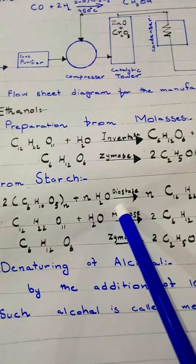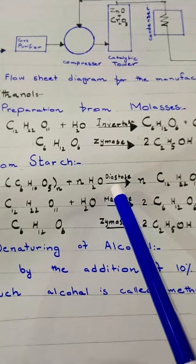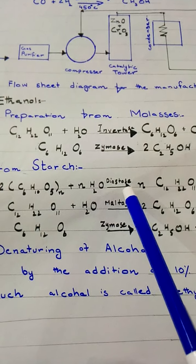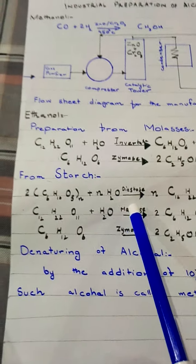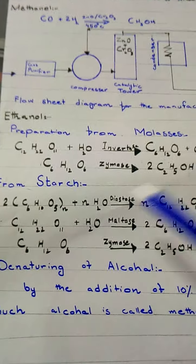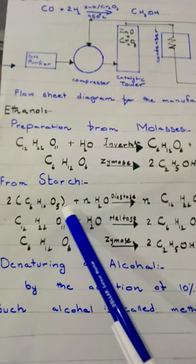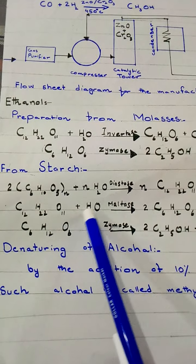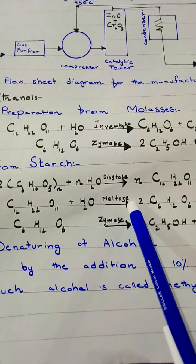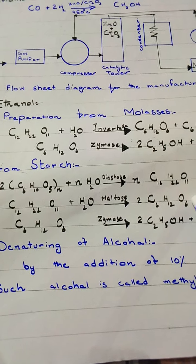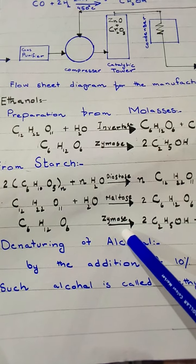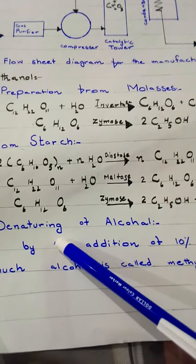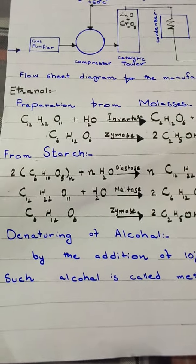Preparation from starch: starch (C₆H₁₀O₅)ₙ + H₂O in the presence of diastase enzyme is converted into maltose (C₁₂H₂₂O₁₁). In the second step, maltose is further hydrolyzed in the presence of maltase enzyme to give two molecules of glucose. Glucose is then converted in the presence of zymase enzyme into ethanol and carbon dioxide.